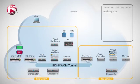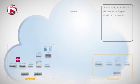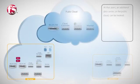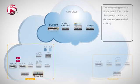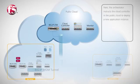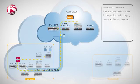But what happens if both data centers are reaching capacity? The same process can be accomplished with additional data centers and even public cloud environments. Just as we saw before, Big IP GTM will publish a message to the message bus, indicating that both data centers have reached capacity. The orchestrator then instructs the cloud controller to deploy a new application instance, but this time in the public cloud domain.